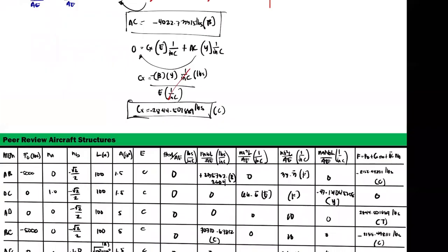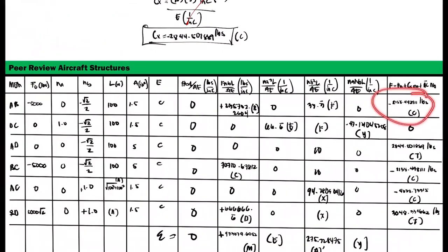So for member AB, we have negative 2155.949811 pounds compression because that is negative. DC is 0. AD is 2844.501889 pounds tension. And BC is negative 2155.49811 pounds compression. And AC is negative 4022.73315 pounds compression. And BD is 5048.334662 pounds. Okay.